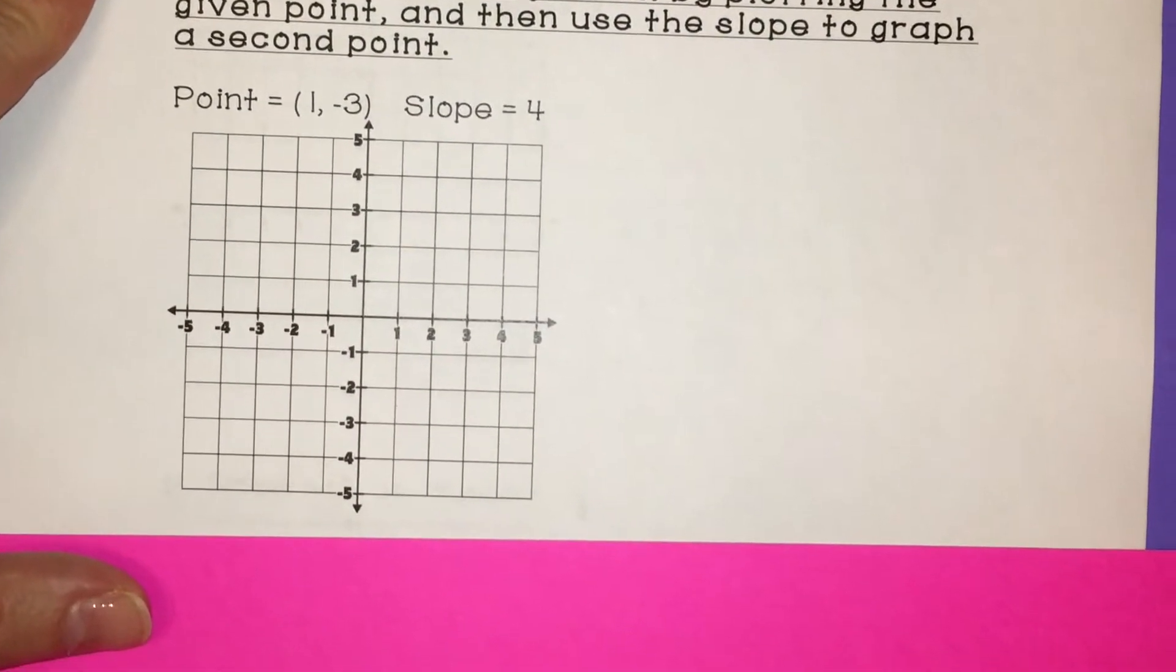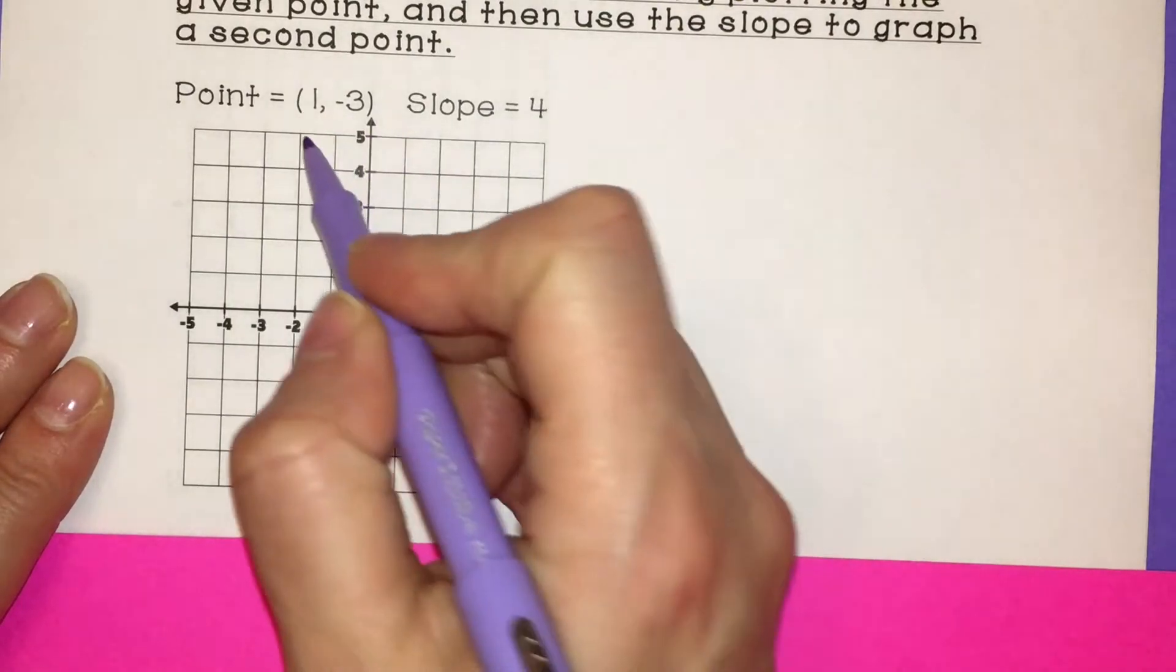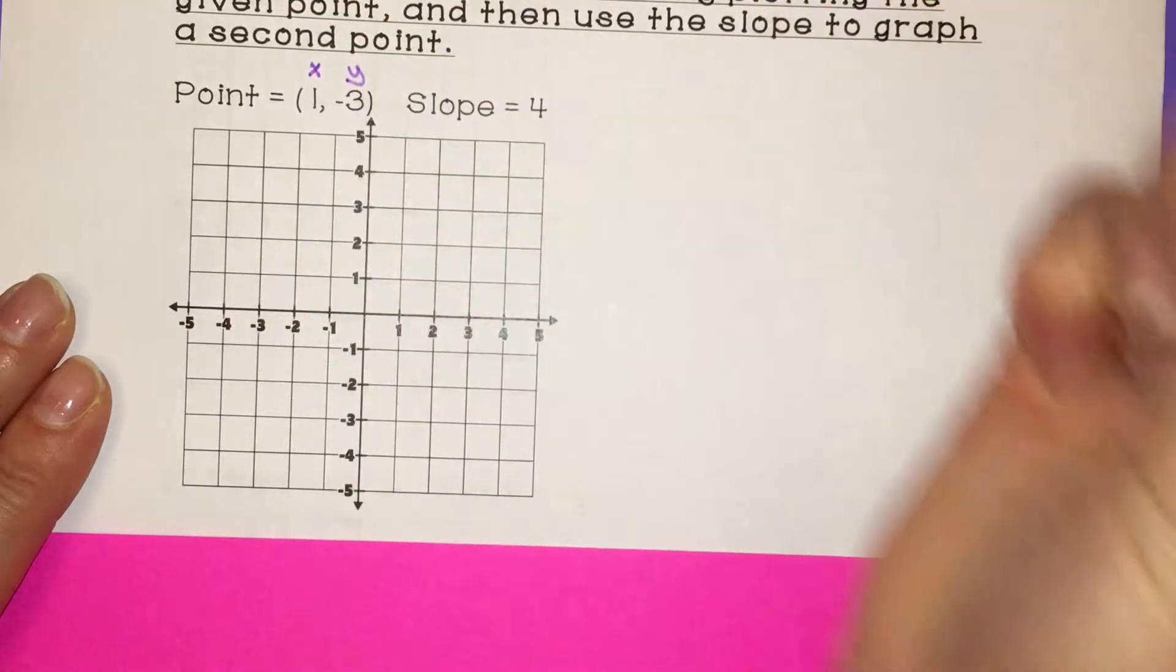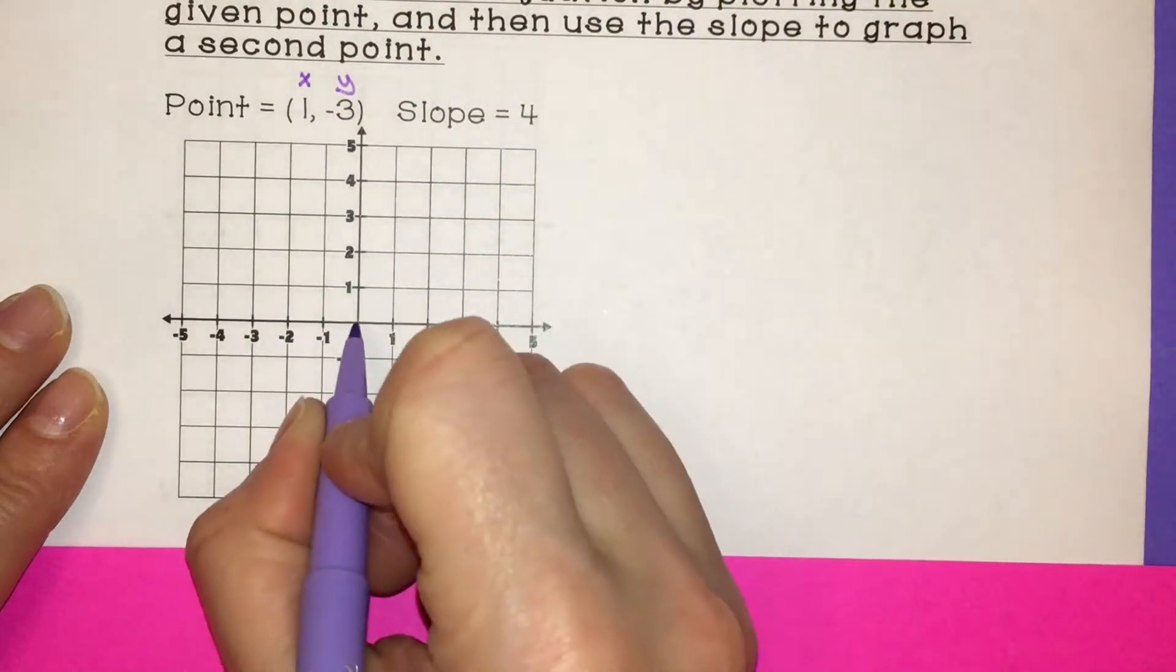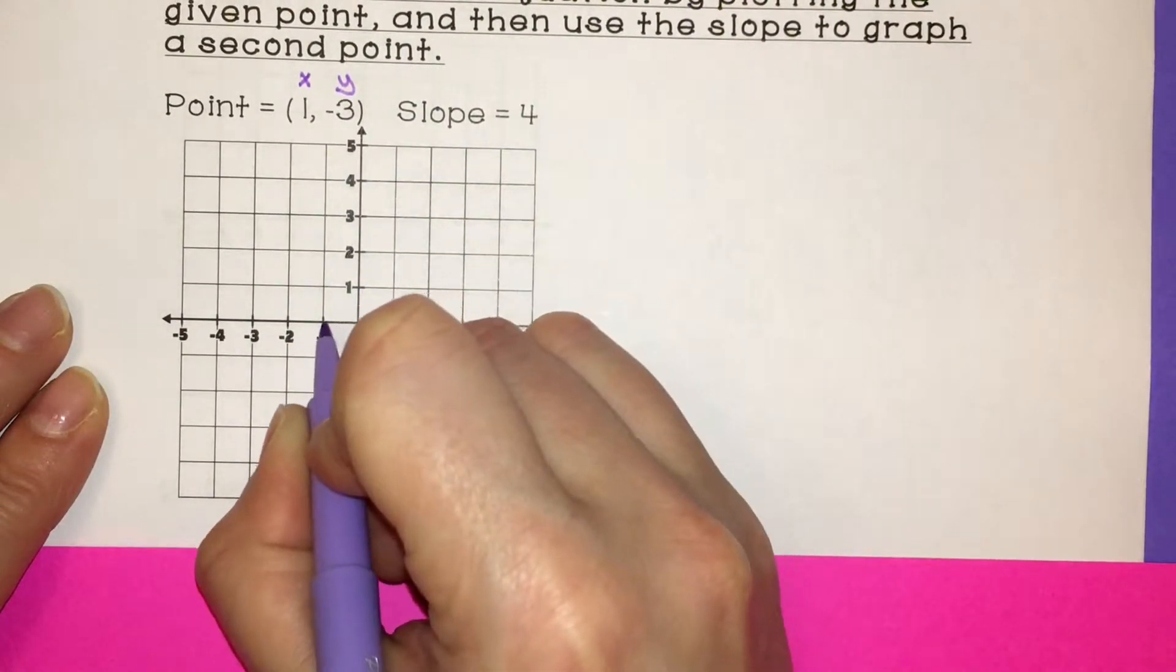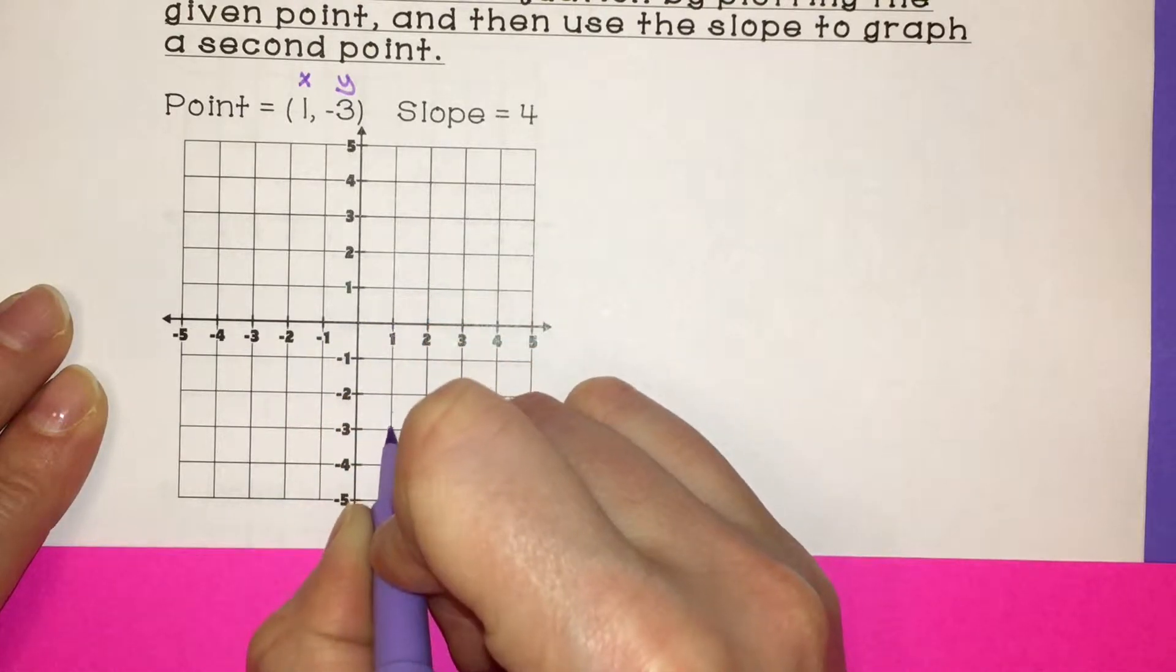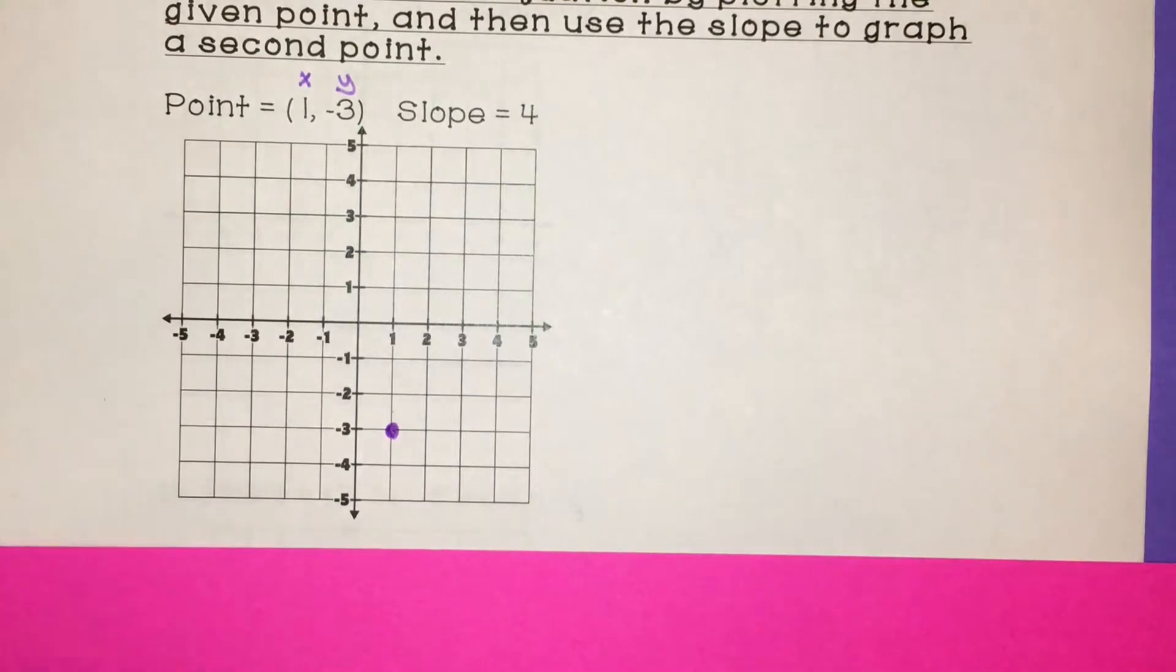Okay, so here's our first one. We're given the point (1, -3). So remember, x always comes first, and then it's y. So I'm going to plot that x, y value. So x is positive 1, to the right one. y is negative 3, down 3. We have our first point graphed.